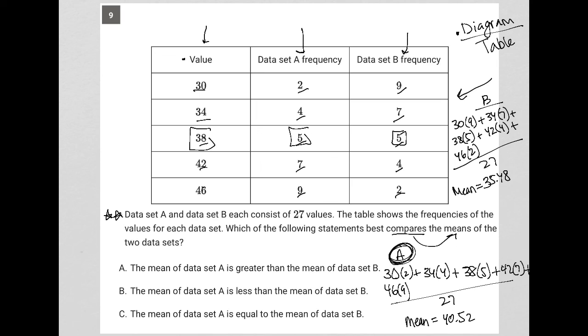So the answer choices here says the mean of data set A is greater than the mean of data set B, choice A. That is absolutely correct.